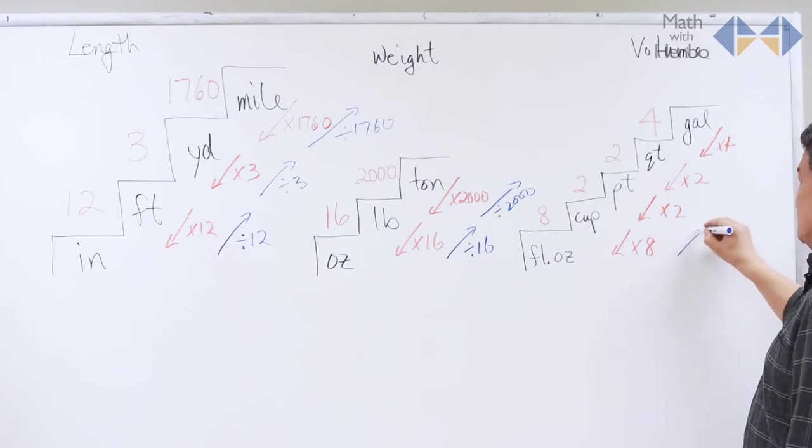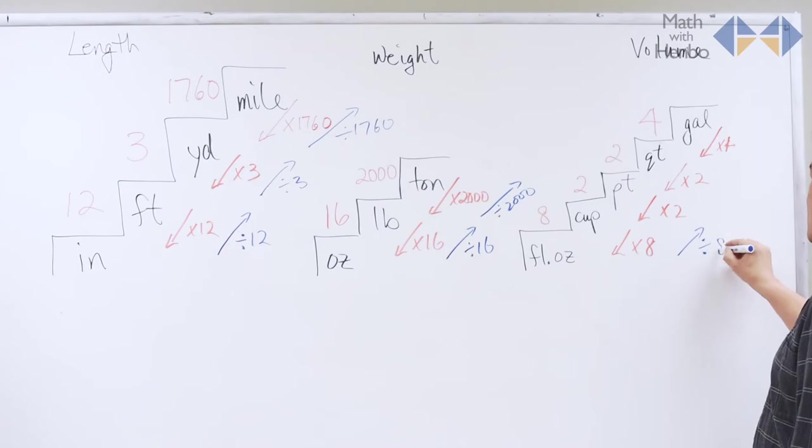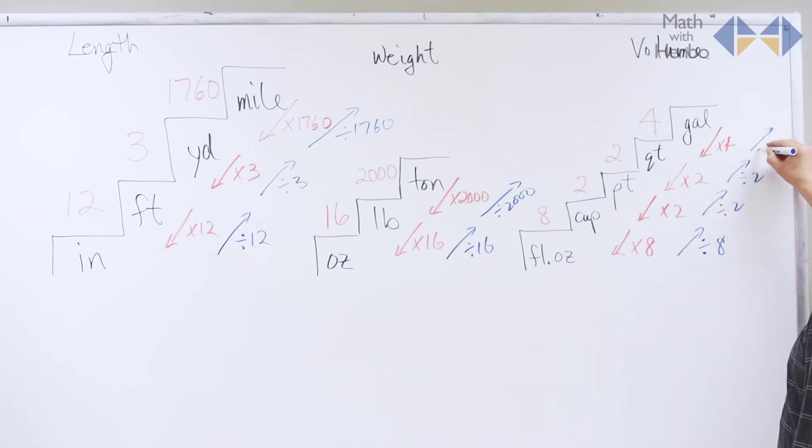Same thing for fluid ounces. Divide, if you're converting fluid ounces to a cup, by 8. Cups to a pint, by 2. Pint to a quart, by 2. And quart to a gallon, by 4.